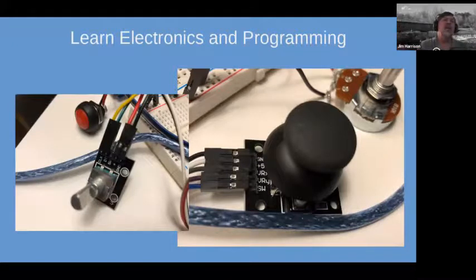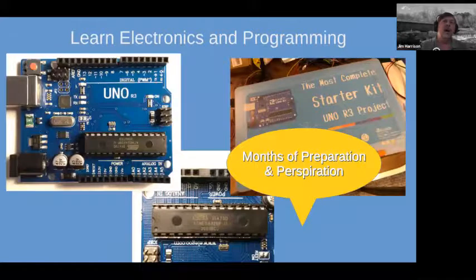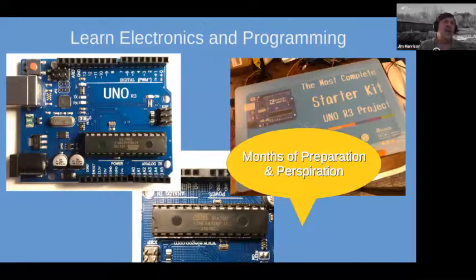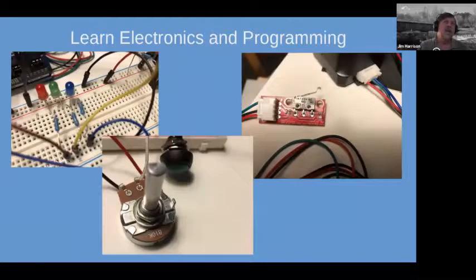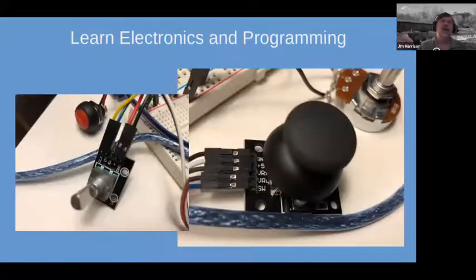The Arduino is open source — it was designed in Italy and lots of different companies make it. The one I used wasn't made by Arduino itself, so it's a bit cheaper. They're very inexpensive: $7 to $10 for third-party versions, with the original from the Arduino company about $20. A lot of these components are in the range of $0.59 to $2, but they do add up.